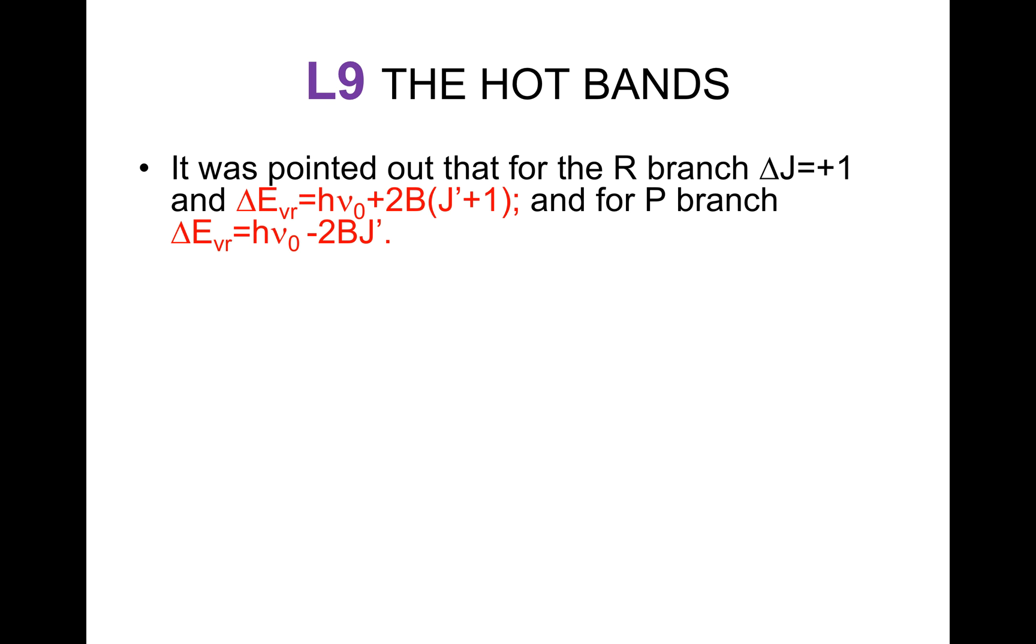It was pointed out that for the R branch, delta J is equal to plus 1, and delta EVR is equal to H nu naught plus 2B into J prime plus 1. And for P branch, delta EVR is equal to H nu naught minus 2BJ prime.